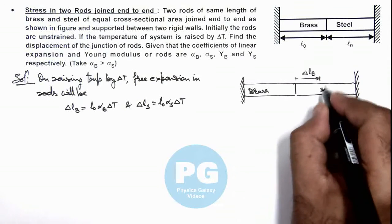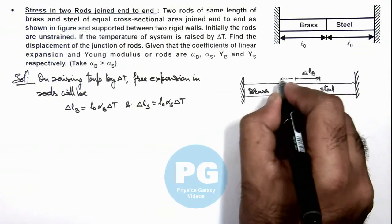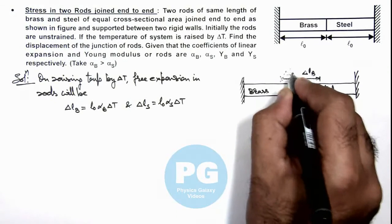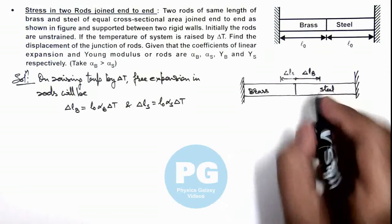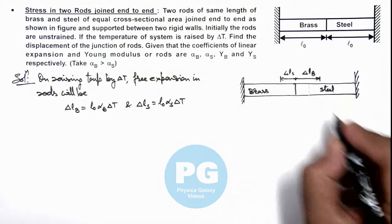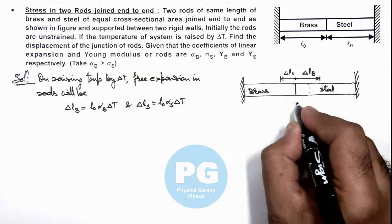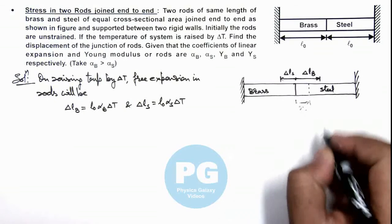And if steel were alone, this will expand toward left by a distance ΔLS. But here in this situation, this would be the final position of junction, or we can say that junction will be displaced by a distance x.